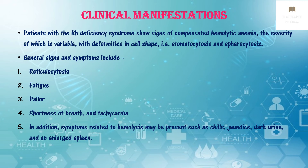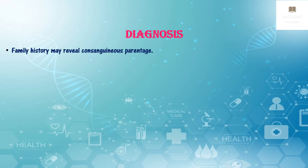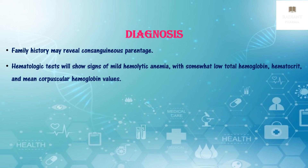Symptoms related to hemolysis may also be present, such as jaundice, dark urine, and an enlarged spleen — splenomegaly. Now let us see how to diagnose a patient with RH deficiency syndrome. Family history may reveal consanguineous parentage — consanguineous meaning related by the same blood.